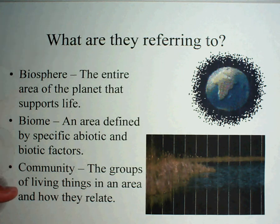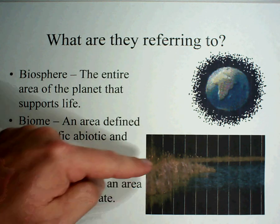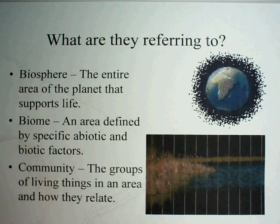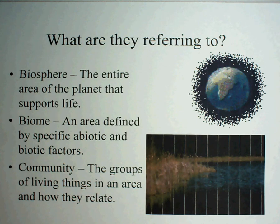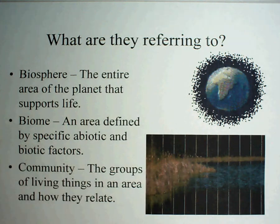Within a biome you can have a community — groups of living things in an area and how they're related to one another. You can tell from this picture here, this would look very similar to a place in Florida where you have water and grasses, all kinds of amphibians, fish, and animals that come up to the water to drink. That community and how they survive in that area are very important, and we're always interested in making sure we protect these areas so the animals can actually live.